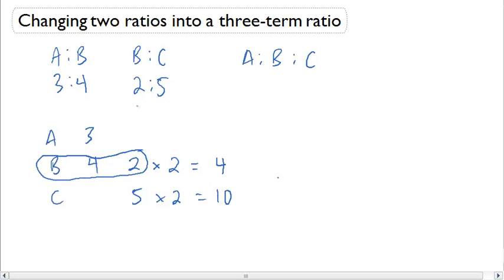Now my second ratio, for B it's 4, and for C it's 10. Now that B is the same term in both ratios, I can write it as one long ratio. So now I have A is 3, B is 4, and C is 10.